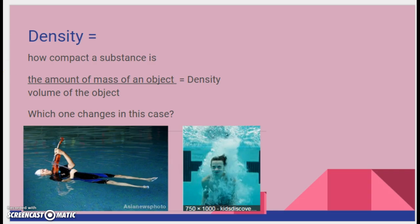Density. Make sure you write this down. Density equals how compact a substance is, or how much stuff there is inside something. It's the amount of mass of an object divided by the volume of the object. So this underline is actually a division bar. And that equals density. So the amount of mass divided by the volume equals density. So which one did we change? We changed the volume. We changed how much space your body takes up. Whether it's spread out flat or curled up into a little ball. So changing the volume makes a difference.